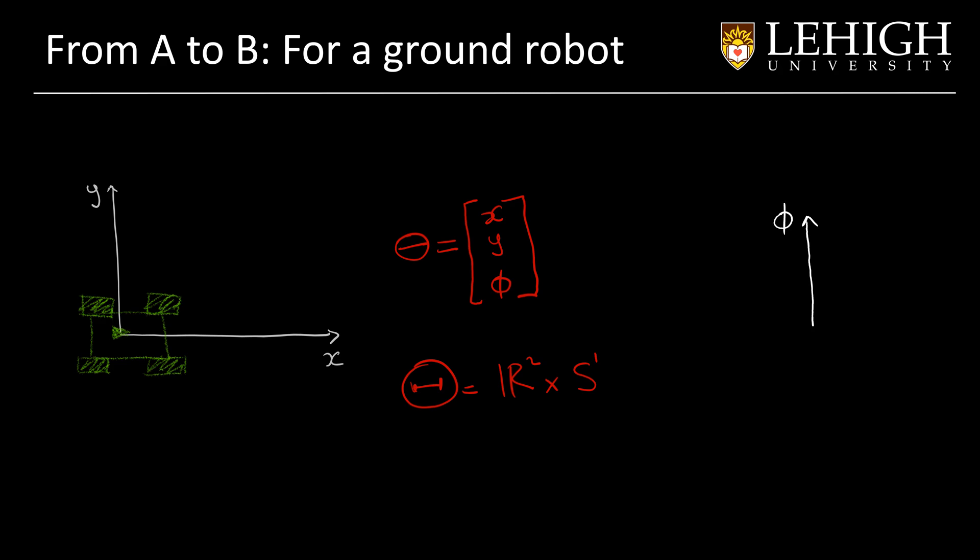And the plane, this is our representation of the configuration space. The position of the robot is basically here, in 0, 0, 0.